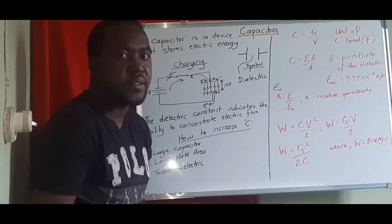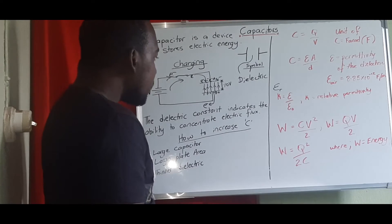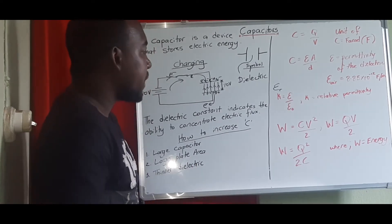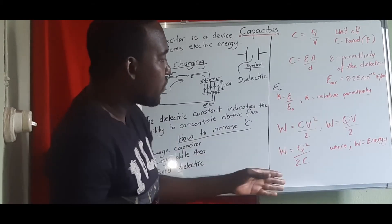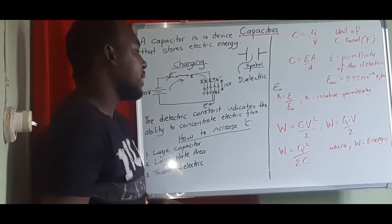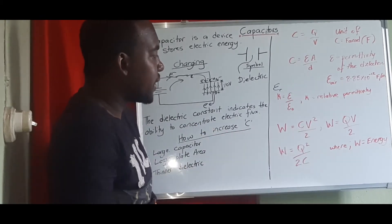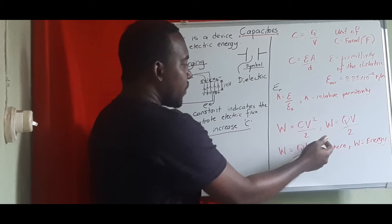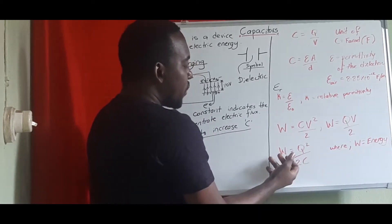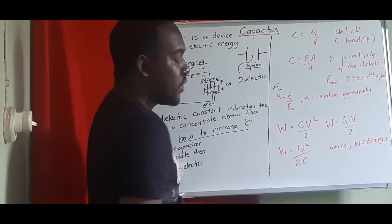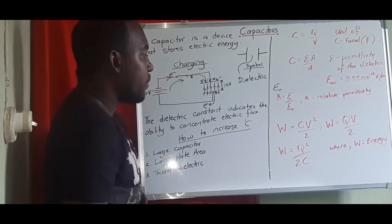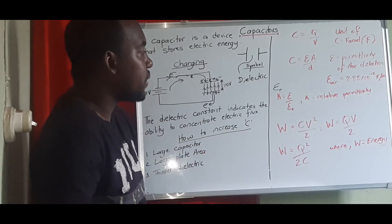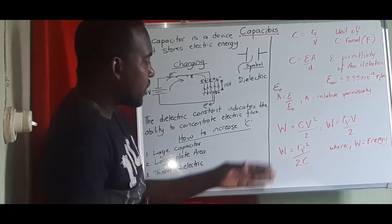The energy stored by your capacitor can be found using any of these equations depending on the quantities given: W equals CV squared over 2, or QV over 2, or Q squared over 2C. Here W represents energy, Q represents charge, V represents voltage, and C represents capacitance.